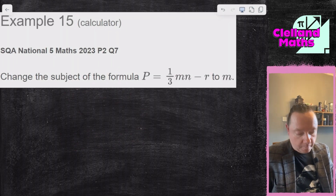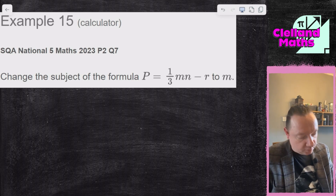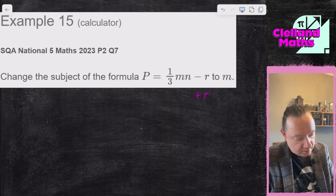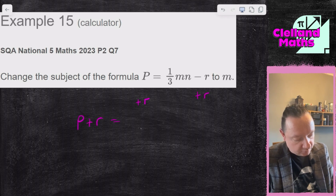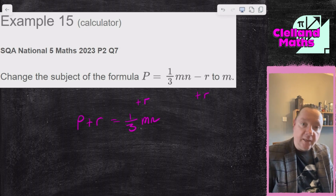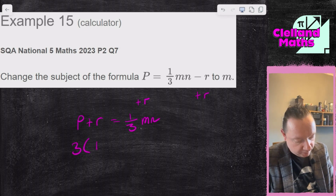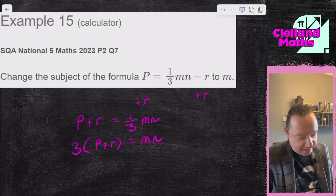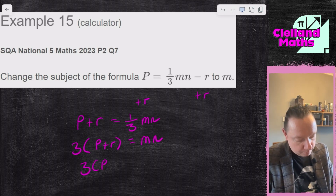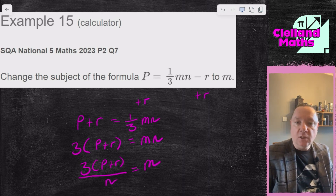Example 15 — SQA National 5 Maths 2023, Paper 2, Question 7. p = ⅓mn − r, change to m. Add r to both sides: p + r = ⅓mn. Times by 3 to remove the fraction: 3(p + r) = mn. Divide by n: m equals 3(p + r) over n. And we're done.